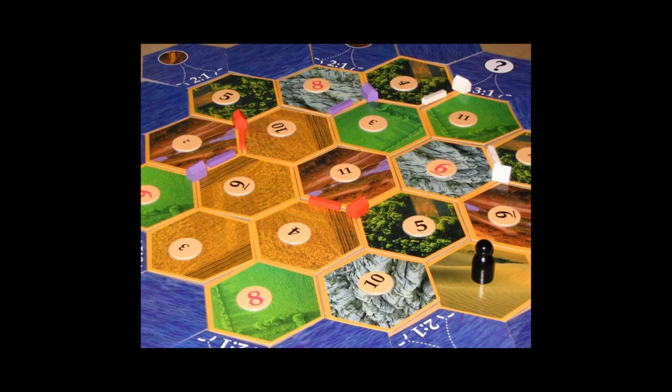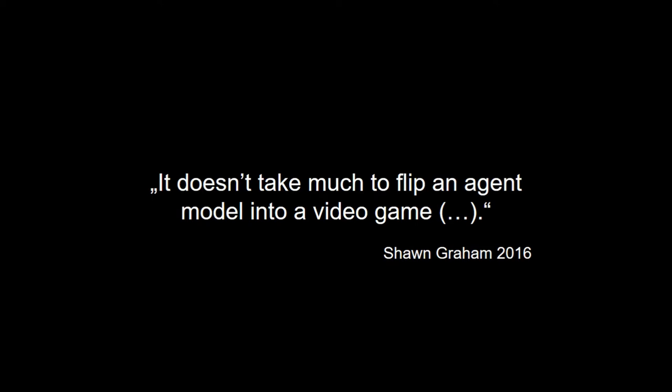If we look into board games, it becomes clearer to draw the comparison between games and agent-based models. If you look at the agent-based model shown before, we have a patch-based world. And if you look at Settlers of Catan — one of the most well-known Euro games — we also have a patch-based world where patches have values relating to how certain resources can be gathered. So it doesn't take much to flip an agent-based model into a video game, and this is what I'm trying to do: use games as tools of research.